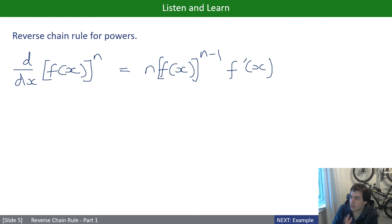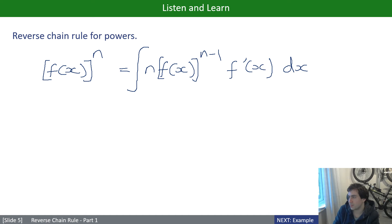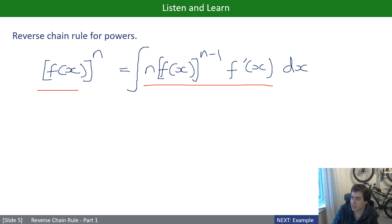We can reverse this: the integral of n·[f(x)]^(n−1)·f'(x) equals [f(x)]ⁿ. So if you see something in that form, you can integrate it immediately. The constant n doesn't really matter — if it were 2n or a half, you could tweak by putting the appropriate constant factor in. Really it's about recognising a power of a function multiplied by its own derivative.